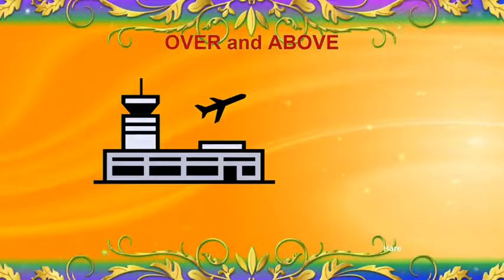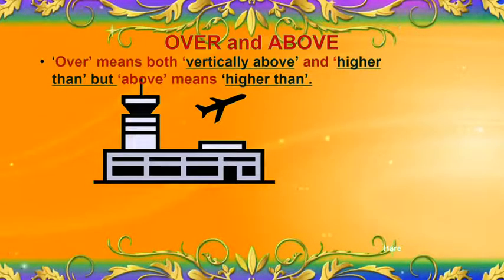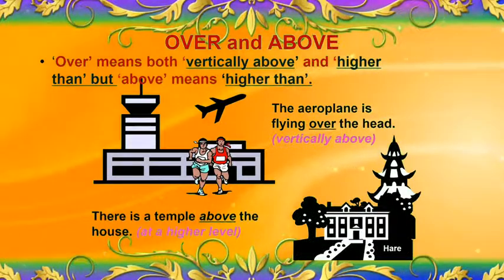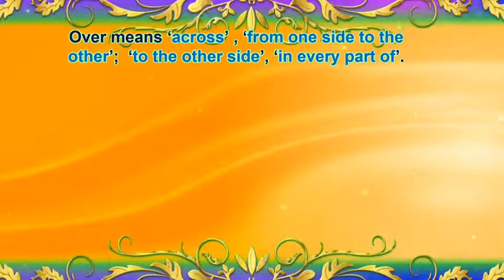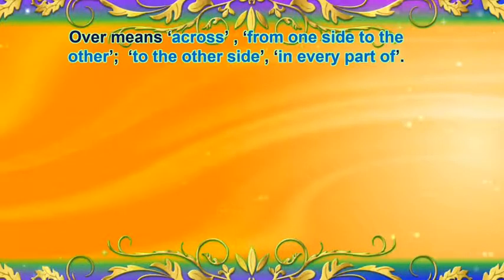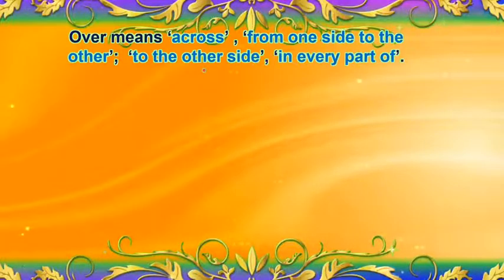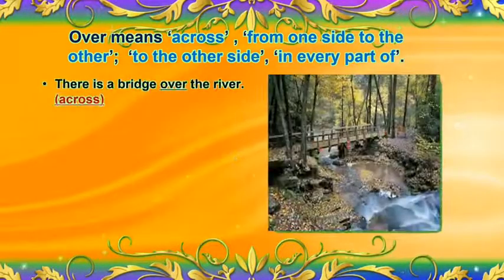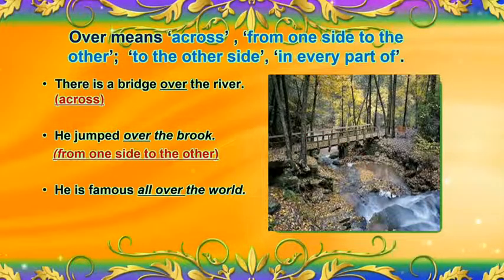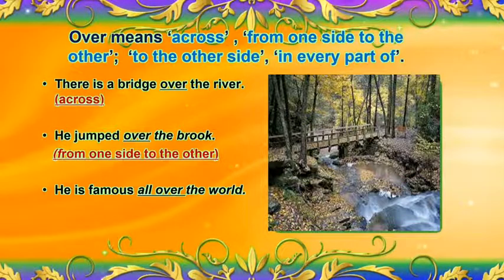Over and above: 'over' means both vertically above and higher than, but 'above' means higher than. For example, the aeroplane is flying over the head — here, 'over' means vertically above. There is a temple above the house — 'above' means at a higher level. 'Over' also means across, from one side to the other, or in every part of. There is a breeze over the river — 'over' means across. You jumped over the brook — 'over' means from one side to the other. He is famous all over the world — 'all over' means in every part of.